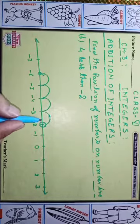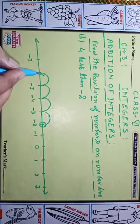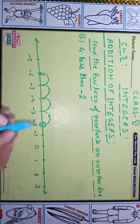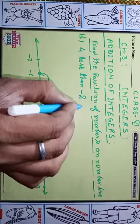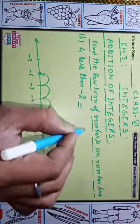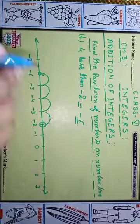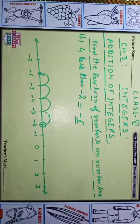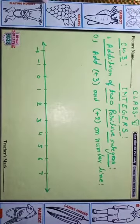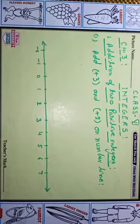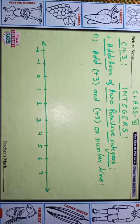Second step, third step, and fourth step — we stop here. This becomes four less than minus two, which means we go to the minus six place. That value becomes minus six. Next: eight — sorry — plus three and plus two, addition of two positive integers on the number line.